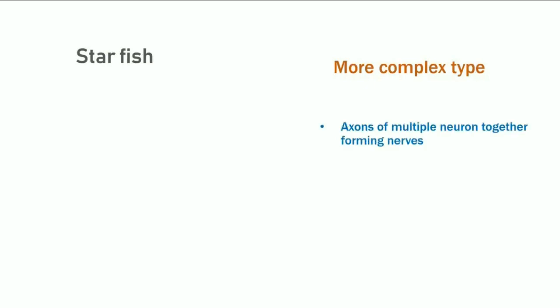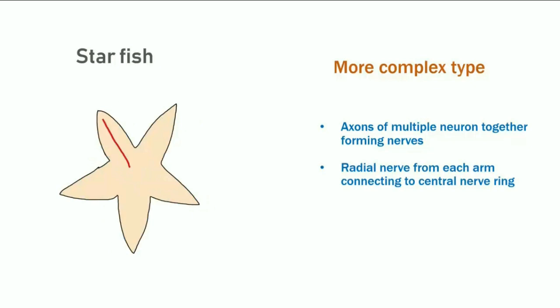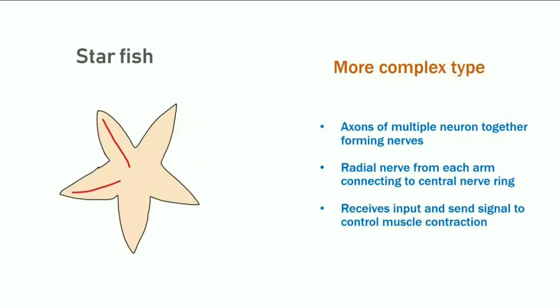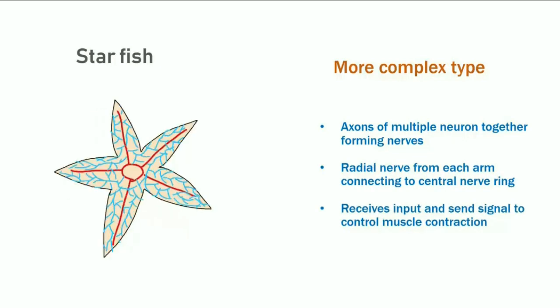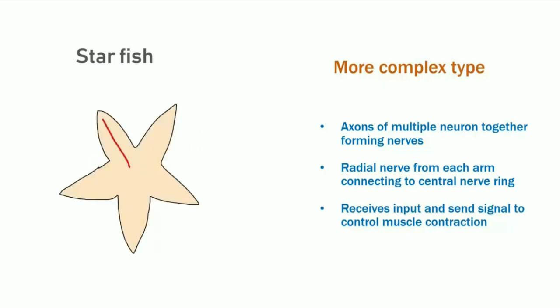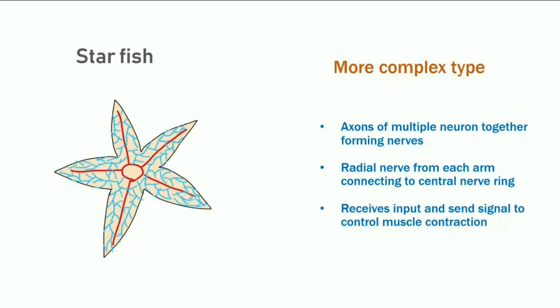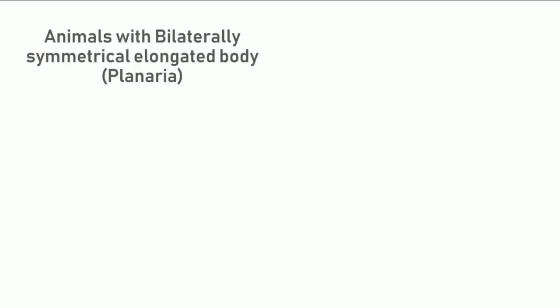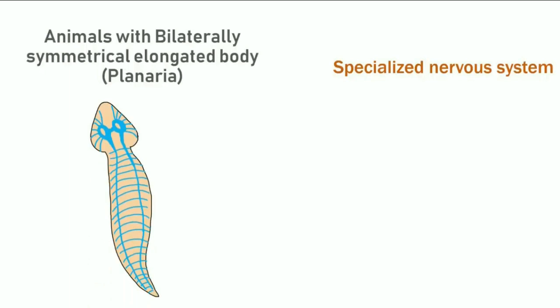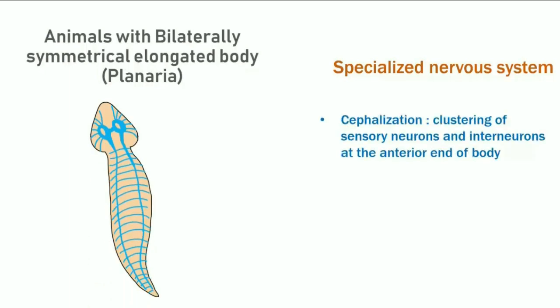In more complex animals like starfish, they have a more complex type of nervous system. The axons of multiple neurons together form a nerve, and radial nerves from each arm connect to a central nerve ring, which receives input and sends signals to control muscle contraction.